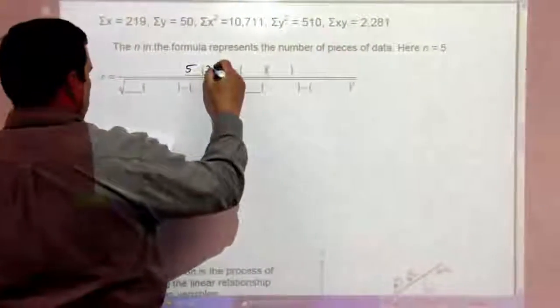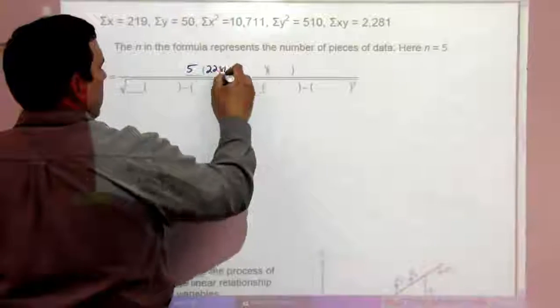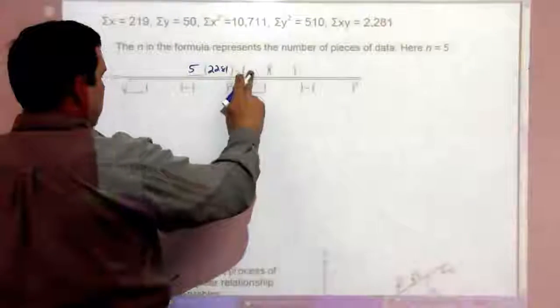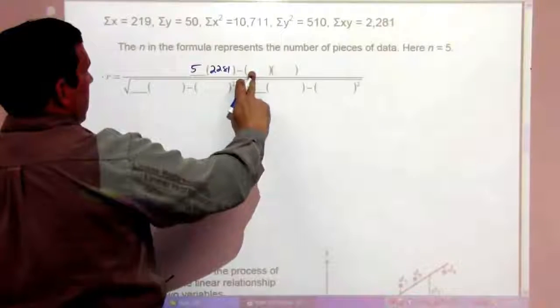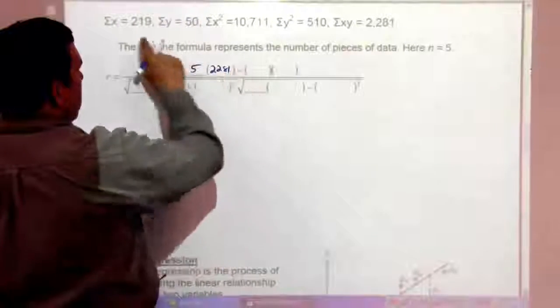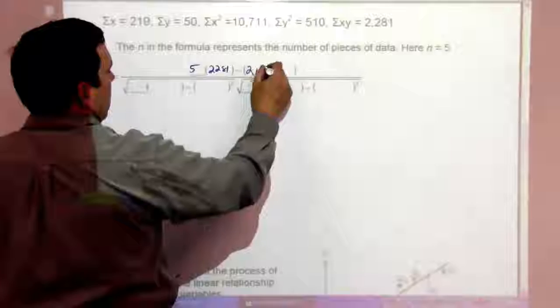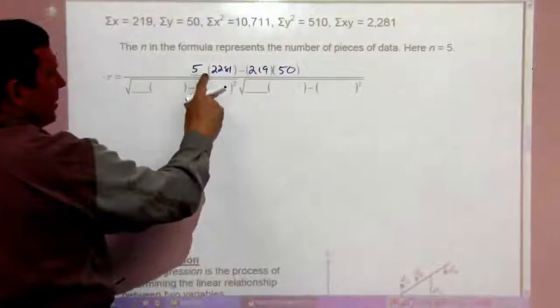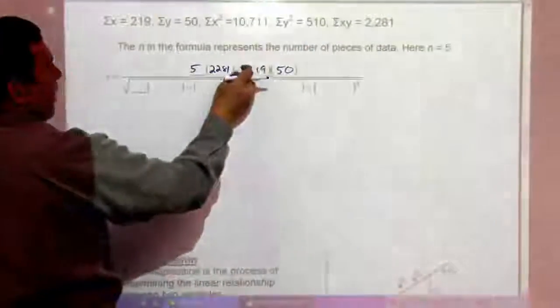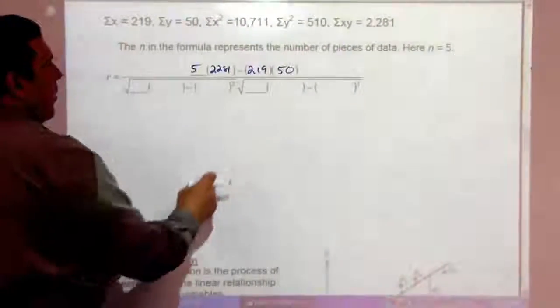That's this one here. So, that's going to be 2281 minus the sum of the X's, sum of the Y's. So, we have 5 times the sum of the XY's minus the sum of the X's times the sum of the Y's.